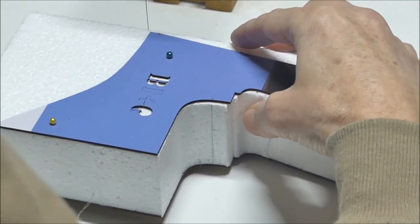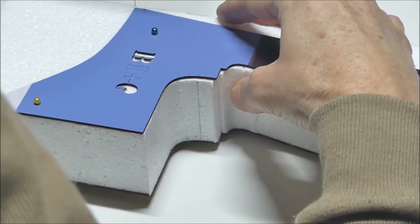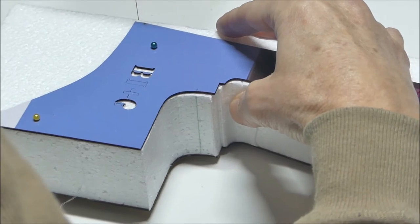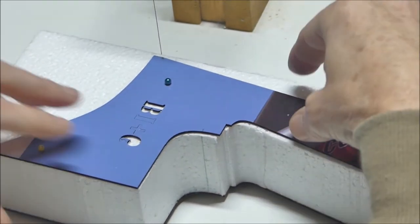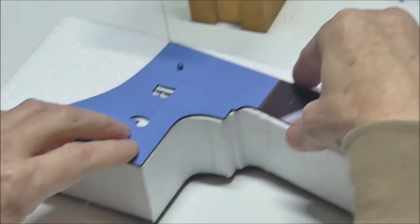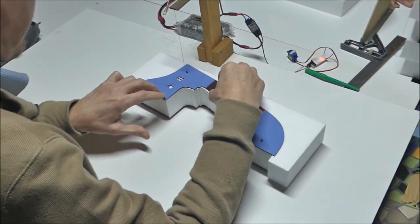That's the green one there, that's the datum. We've lined the two templates up on the datum. Now we're cutting around the larger of the two templates.